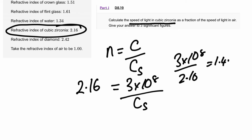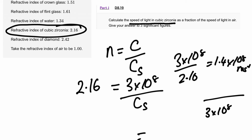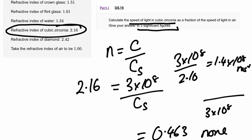That gives an answer of 1.4 × 10⁸ metres per second. But the question asks for the speed as a fraction of the speed of light, so I divide again by 3 × 10⁸, which gives 0.463. There are no units because it's a fraction, and the answer to three significant figures is 0.463.